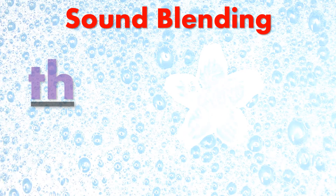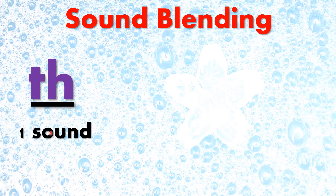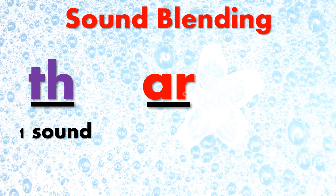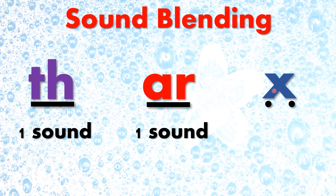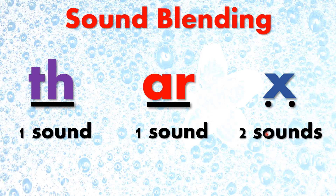Sound blending. TH makes the sound TH — that is one sound. AR makes the sound R — that is one sound. X makes the sounds KS — that is two sounds.